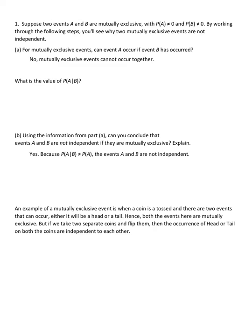Suppose two events A and B are mutually exclusive, with the probability of event A not being zero and the probability of event B not being zero either. By working through the following steps, you'll see why two mutually exclusive events are not independent. For mutually exclusive events, can event A occur if event B has occurred? No, mutually exclusive events cannot occur together.